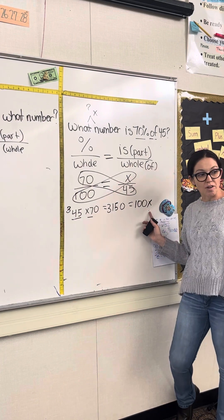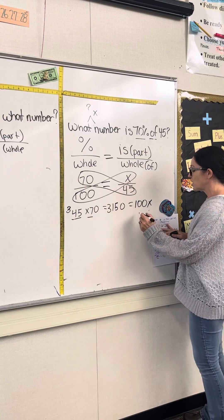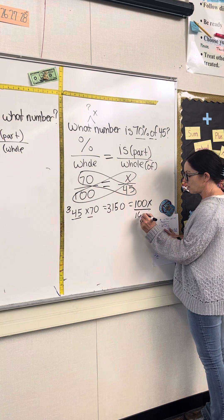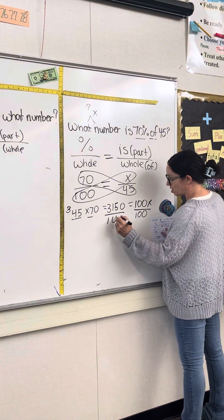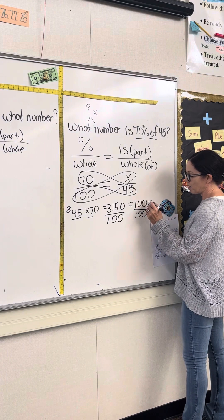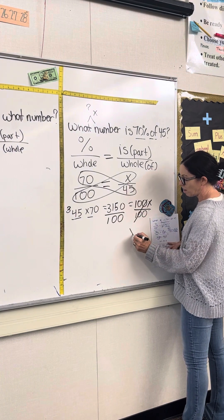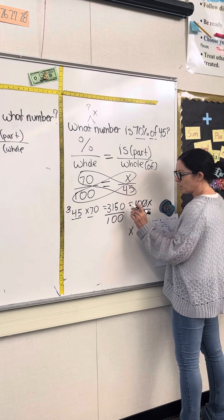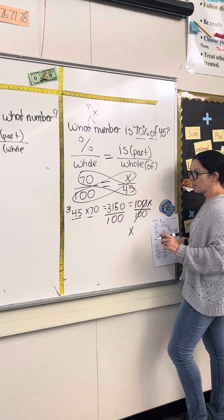So we're trying to solve for the unknown, which is the x, which means that I need to get rid of this 100. I'm gonna do that by dividing both sides of my equation by 100. 100 divided by 100. That's gonna cancel that out. I'll have x.